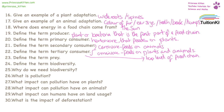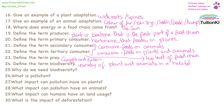A prey is an animal that is caught and eaten. Biodiversity is a variety of animal and plant life in the world or habitats. Biodiversity is the foundation of a healthy ecosystem, which is very important for human wellbeing and life on earth.